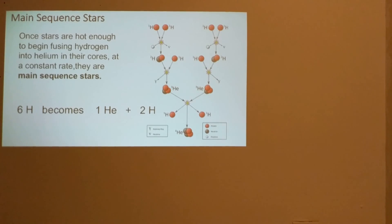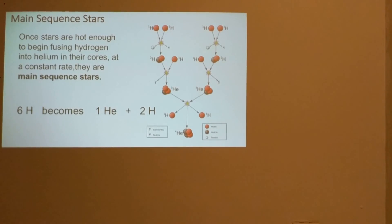This occurs in the Sun constantly. In fact, about 600 tons of hydrogen is converted to helium every second in the Sun, and this is the common property of main sequence stars.